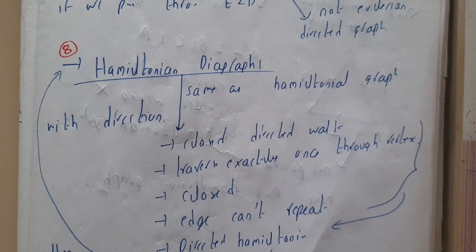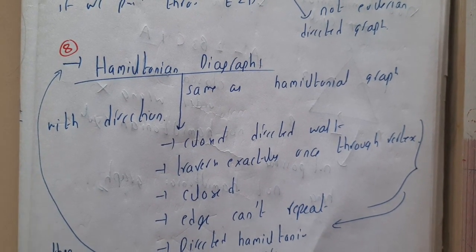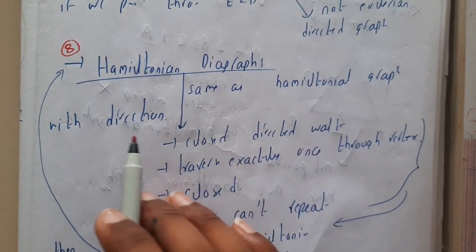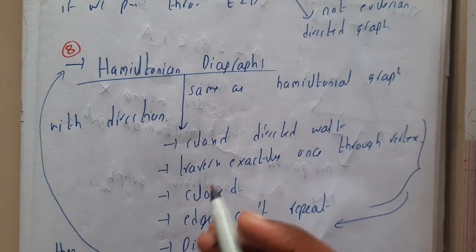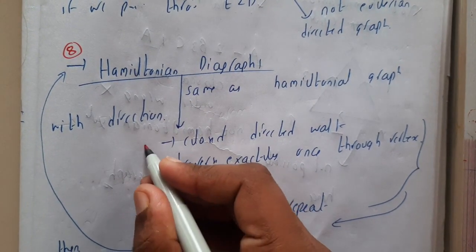If you didn't watch, please watch that and come back here because I'll be using the same terminology and going a bit fast. It is the same as the Hamiltonian graph but with directions. In Hamiltonian graphs, we discussed that it should be closed.